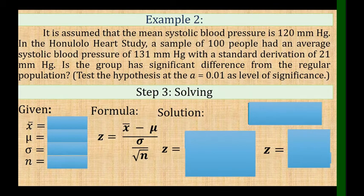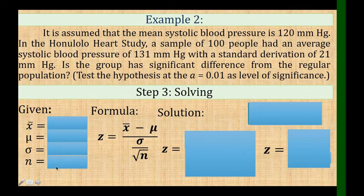For Step 3, we solve. The formula is: Z equals the sample mean minus mu, over sigma over the square root of n. Write the given values according to what is in the formula: mean, mu, sigma, and n. The number of samples n is 100.